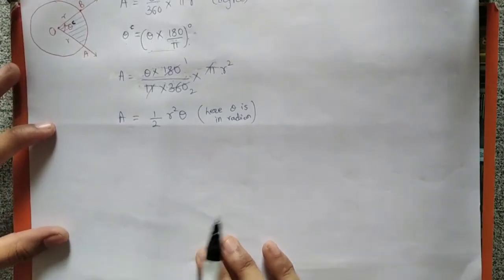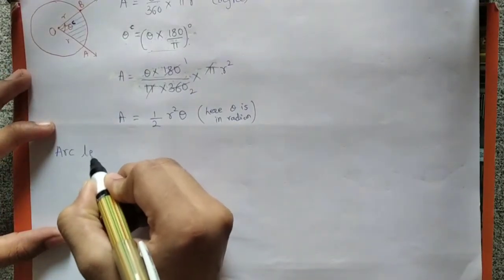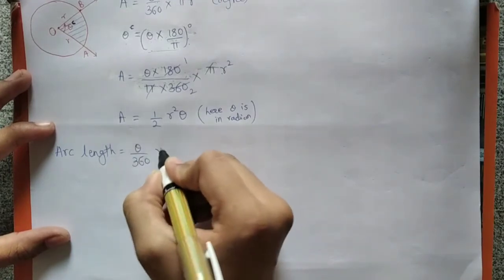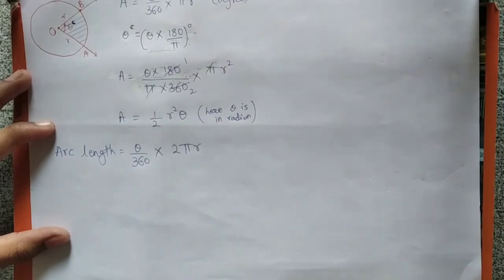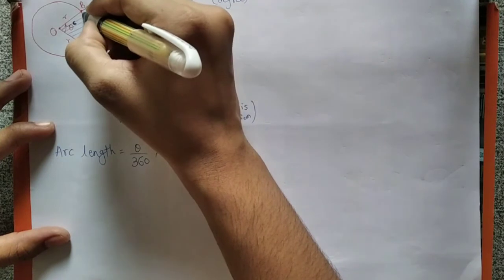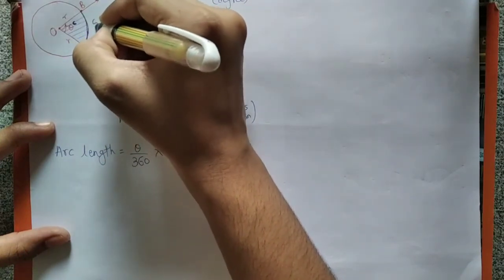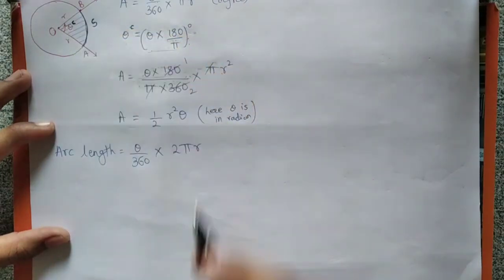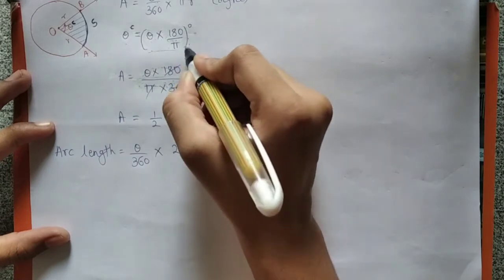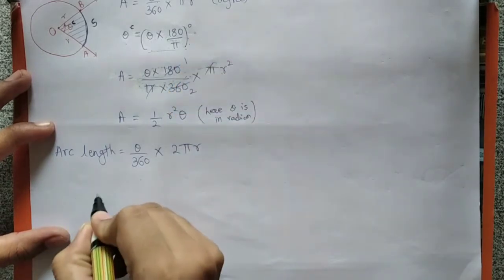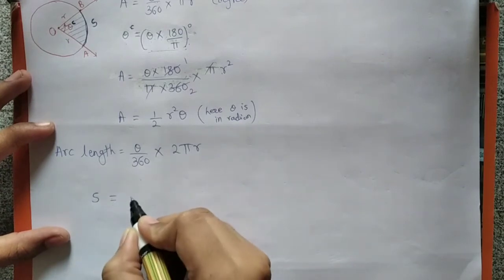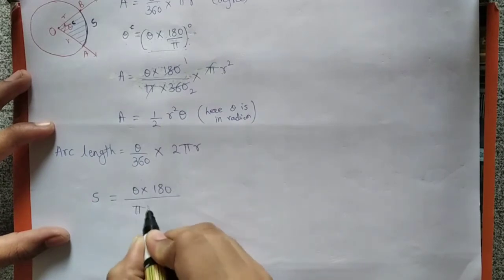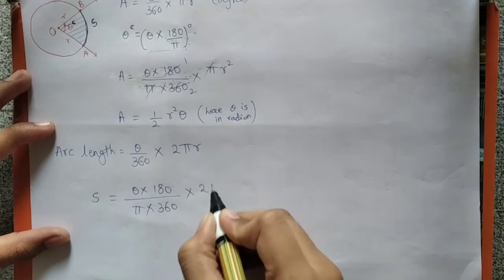Now next one is arc length. Arc length का formula क्या था? Theta in degrees means जो 10th standard में किया: theta upon 360 into 2 pi r. Arc length — this length — is denoted by capital S. हमें theta radian में दिया है, तो similarly यहाँ पर degree measure डाल देंगे: S equal to theta into 180 upon pi, into 1 upon 360, into 2 pi r.